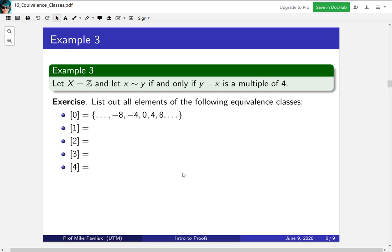Alright, now let's take a look at what these equivalence classes are. [1] is all y where y minus one is a multiple of four. So it's all things that are one more than a multiple of four. What about the next one? [2] is all things that are two more than a multiple of four. [3] is things that are three more than a multiple of four. And then finally, [4] is things that are four more than a multiple of four.